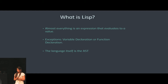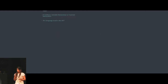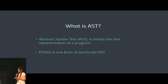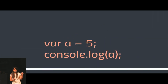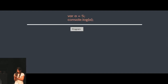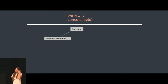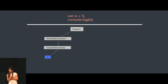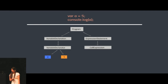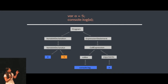The beauty of Lisp is that the language itself is the AST. An abstract syntax tree is a tree-like representation of the program. AST ECMAScript tree is one form of JavaScript AST. For a code snippet like variable declaration of A equals 5 and console.log of A, the AST starts with the root node 'program'. We have a variable declaration with a variable declarator 'A' initialized to value 5, and an expression statement which is a call expression where the callee is console.log and the argument is A.